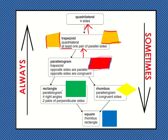Next we have the rectangle. A rectangle is a parallelogram, so it has two pairs of parallel sides — the left and the right are parallel, and the top and the bottom are parallel. There are four right angles. This is very important — this is what sets it apart from other parallelograms: four 90-degree or right angles, also sometimes called square angles, like the corner of a paper. So all rectangles are parallelograms, all rectangles are trapezoids, and all rectangles are quadrilaterals.